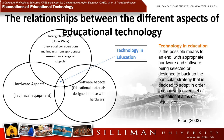Given those elements of hardware and software mentioned in the previous slides, you might ask: what is the relationship between the different aspects of educational technology? We have the hardware aspects or technical equipment, the software aspects composed of educational materials designed for use with the hardware, and the intangible aspects — what we call the underwear — which are the theoretical considerations and findings from appropriate research across a range of subjects.